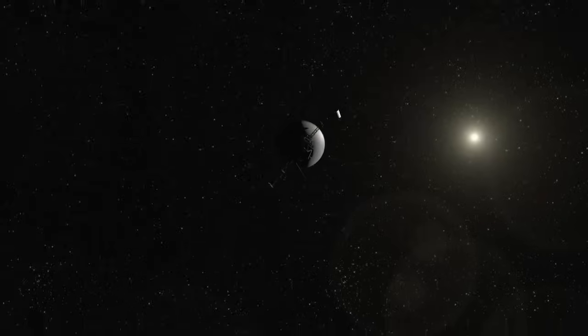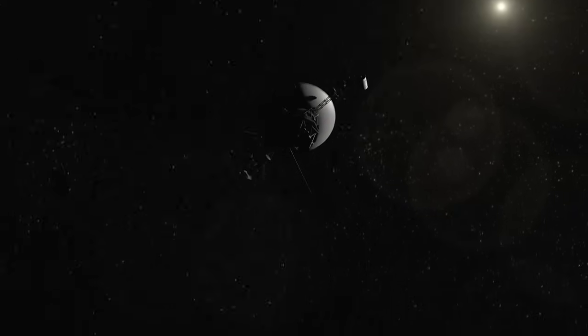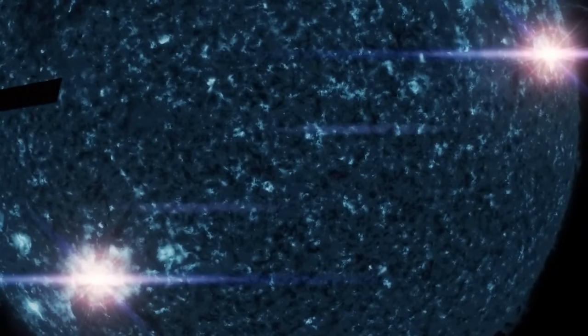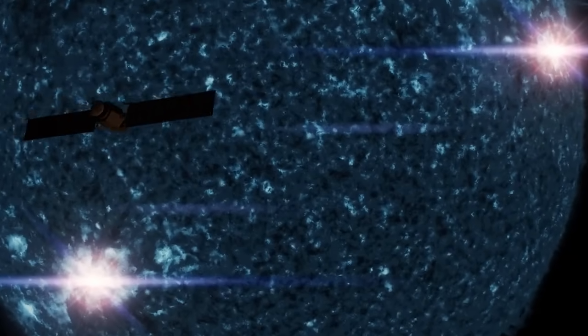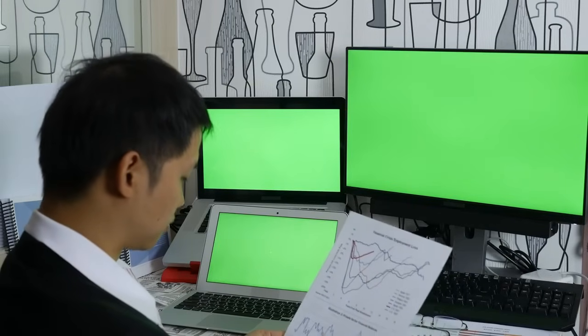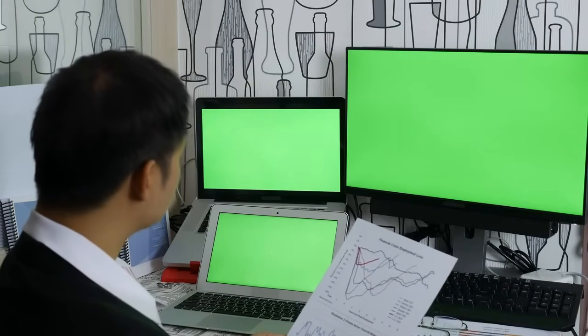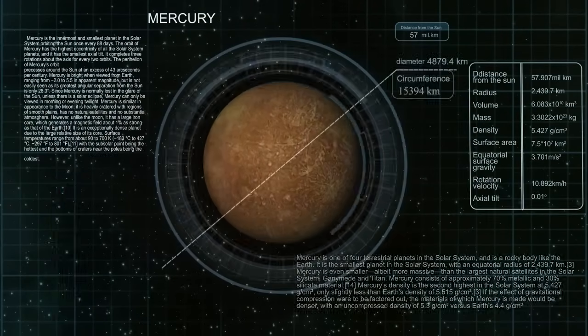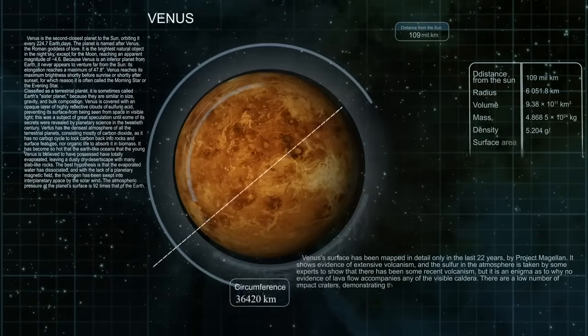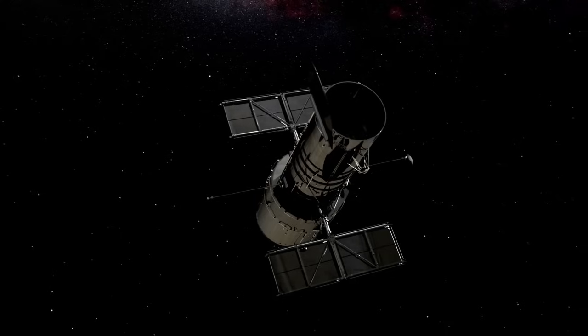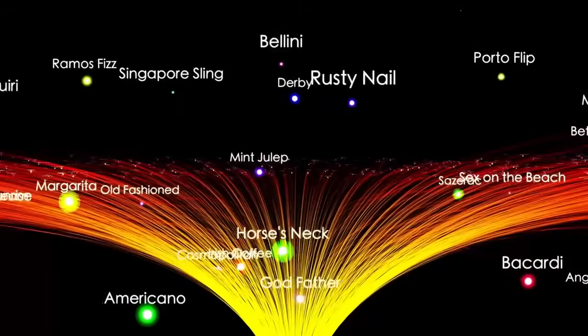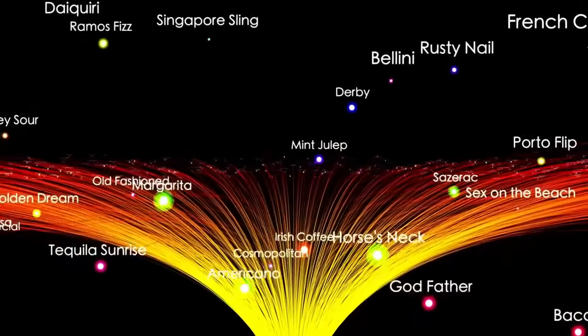However, one of the most memorable images taken by the Voyagers wasn't of a distant planet or a mysterious moon, but of Earth itself. In 1990, as Voyager 1 continued its journey past the edge of the solar system, it turned its camera back and captured a photo of Earth, a small dot only 0.12 pixels wide, suspended in the vast darkness. This image, later known as the pale blue dot, profoundly changed how people viewed our place in the universe.